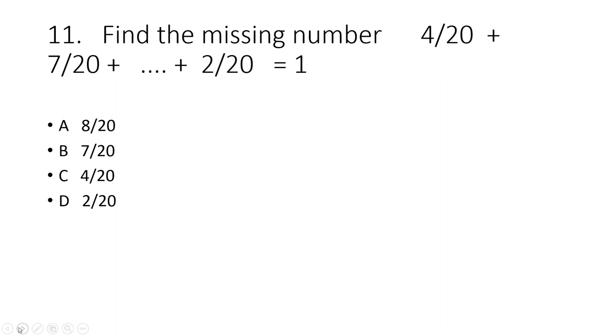Find the missing number 4 by 20 plus 7 by 20 plus dash plus 2 by 20 equal to 1.